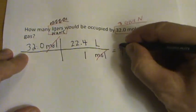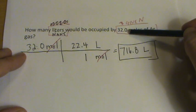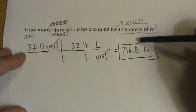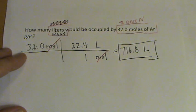See if that makes sense. 32 moles is quite a few moles, and if each mole is about 20 liters, 20 times 32 is over 600. So this 716 number makes sense. I think it fits well.